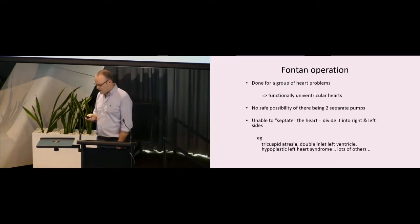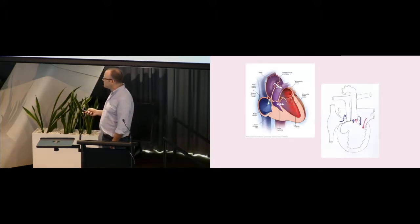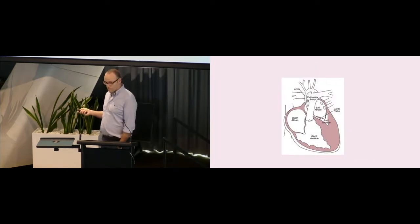That can be because a part of the heart has not developed properly, like a right ventricle or tricuspid valve in tricuspid atresia, or the left side of the heart in hypoplastic left heart syndrome. This is tricuspid atresia where there's no proper tricuspid valve connecting the right atrium to the right ventricle and a very small right ventricle. This is hypoplastic left heart syndrome where in addition to small left heart structures, the aorta is very tiny.